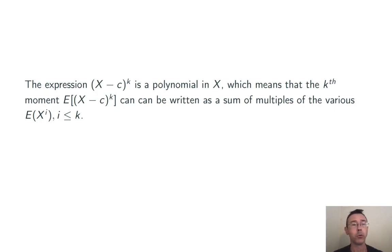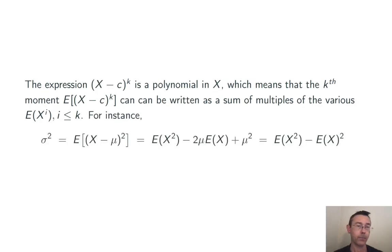Let's make this a little bit more real by looking at the case k equals 2 and c equals μ. In other words looking at variance. Variance, the expected value of (x minus μ) quantity squared, can be rewritten as the expected value of x squared minus 2μ times the expected value of x plus μ squared. Again just by foiling out the (x minus μ) quantity squared and then breaking up the expected value of the sum as the sum of expected values.